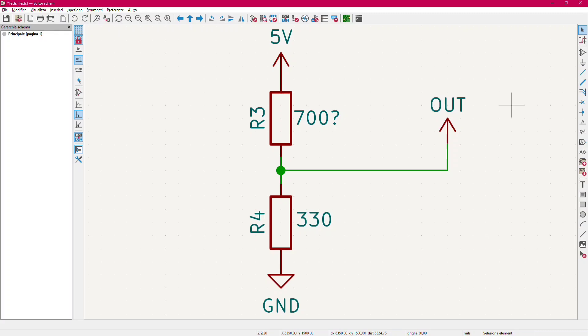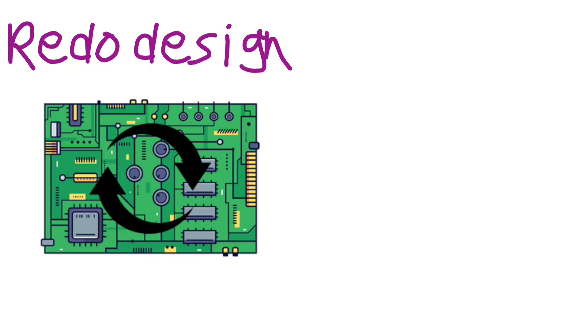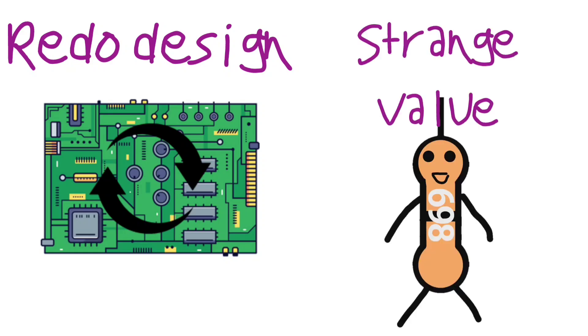Well, you have three possibilities. The first is to redo the design, but obviously this is not an option, as it costs time and money. Buy a 698 ohm resistor that you probably don't have, because it is a strange value and also it's not exactly 700 ohm.